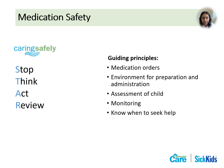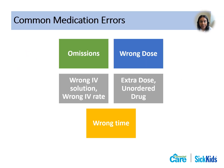Ensure you know when to seek help, including if there are any errors, challenges administering, or adverse effects. Common errors include omission or missing the medication, giving the wrong dose, giving the wrong IV solution or the wrong rate, providing an extra dose, giving the medication to the wrong child, or administering it at the wrong time or frequency. Strategies to prevent errors include using ready-to-administer medications from pharmacies, having a quiet environment with minimal distractions, and double-checking doses with a colleague if unsure.